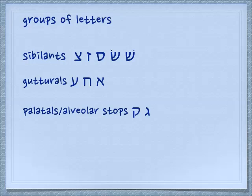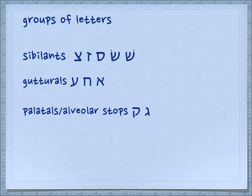Another group is gutturals, and I haven't listed them all here, only the ones we're going to work with today. Aleph is basically a glottal stop — it's not something that we are focused on or aware of as we learn Hebrew. Khet is also in the back of the throat, and ayin also is pretty much pronounced as a glottal stop, although in some dialects and probably in history there was some sound in the throat which you might hear in Arabic. And then we have what's called palatals or alveolar stops, made in the back of your throat: g and k.